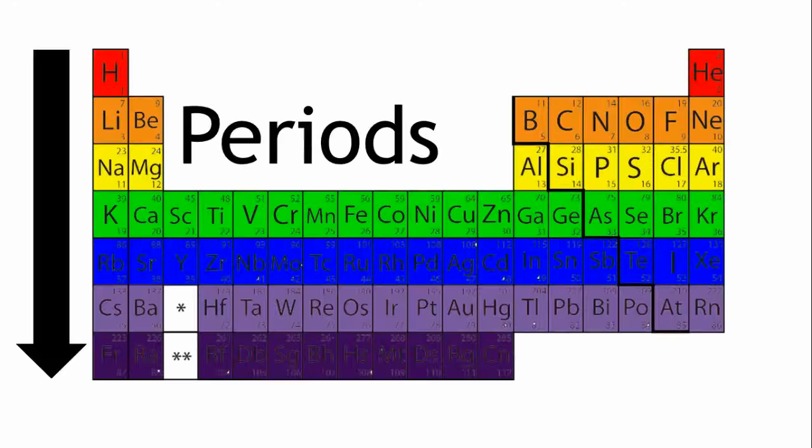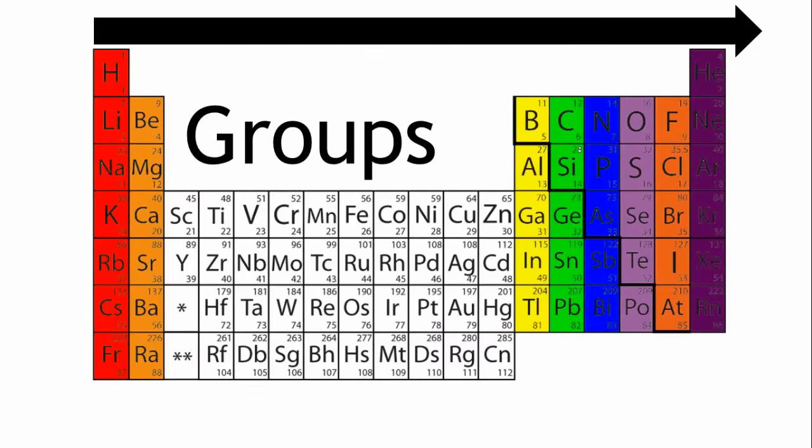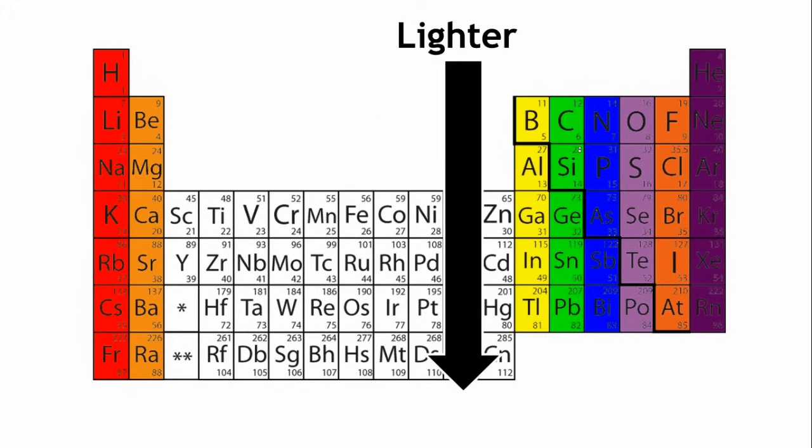The periodic table is arranged in periods and groups, going from the light elements at the top to the heavy elements at the bottom.